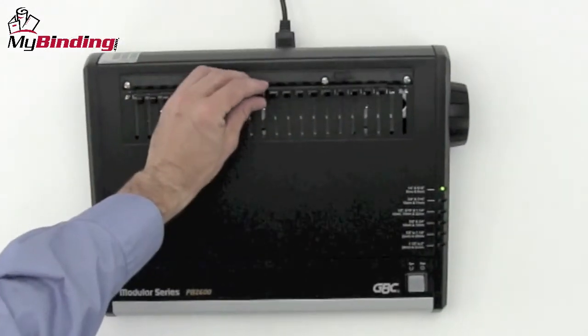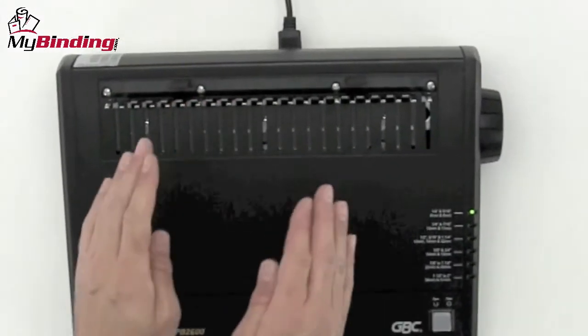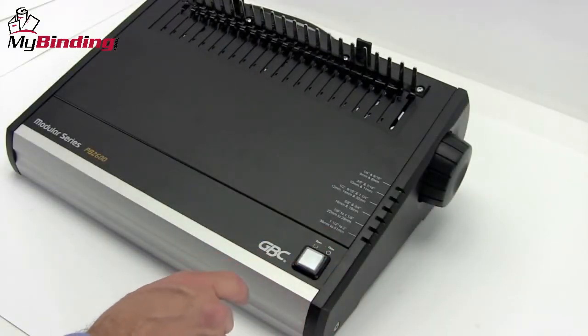Place your plastic comb over the teeth of the comb opener. Make sure the teeth face up and the project faces down. This keeps your finished book from falling apart.